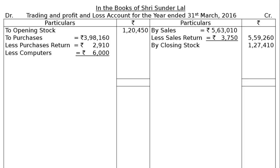Please refer to adjustment D. Purchases included a computer costing Rs. 6,000. This is not a computer business. If it were a computer business, computers would be included in purchases and purchases returns. But since it is not, the business is buying a computer as an asset. Hence, the computer will be deducted from ordinary business purchases and excluded from goods traded. The purchase of this asset will be excluded from purchases and shown in the asset side of the balance sheet under the head fixed assets.